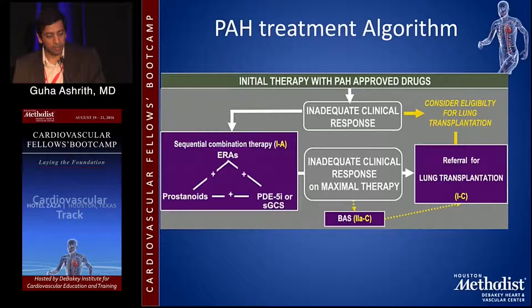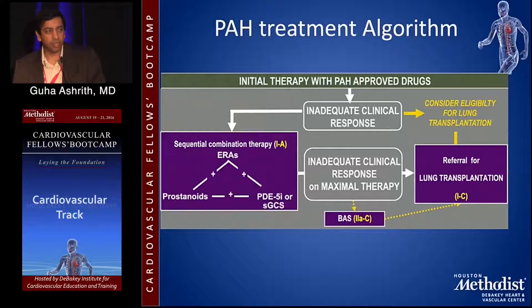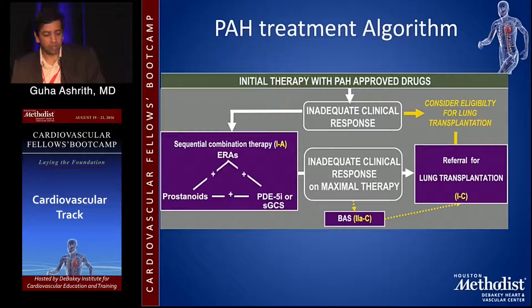There was a recent trial about two years ago called AMBITION, which looked at whether combination initial therapy with an endothelin receptor antagonist and a PDE5 inhibitor was compared with standalone PDE5 and standalone endothelin receptor antagonist. Dual upfront therapy was shown to be beneficial in terms of both improving six-minute walk distance and decreasing morbidity, mainly driven by RV failure-related hospitalization. So now the recommendation is to start dual oral therapy when considering patients for oral therapy.